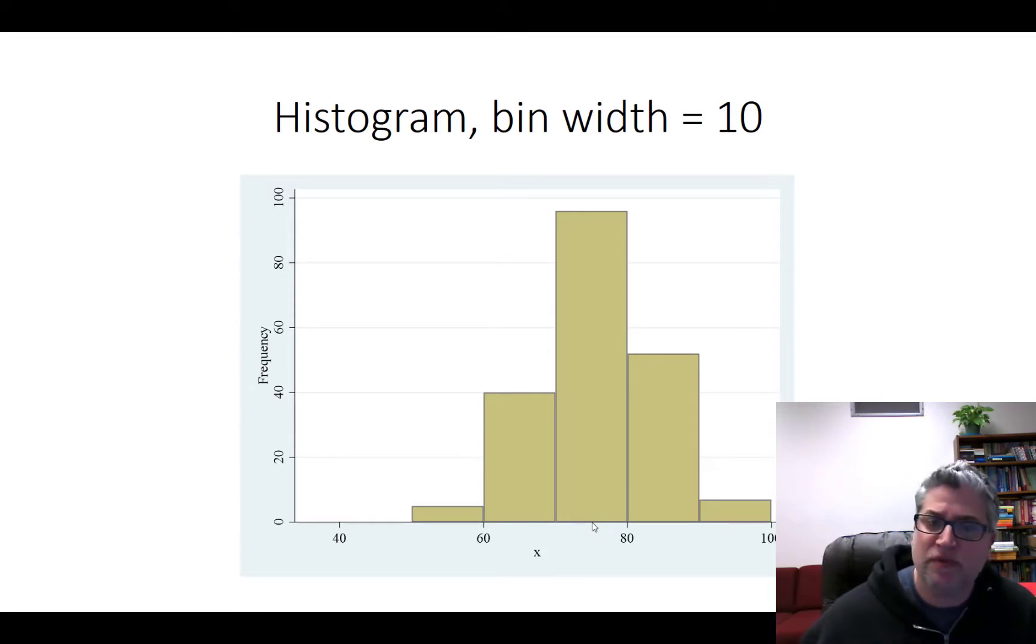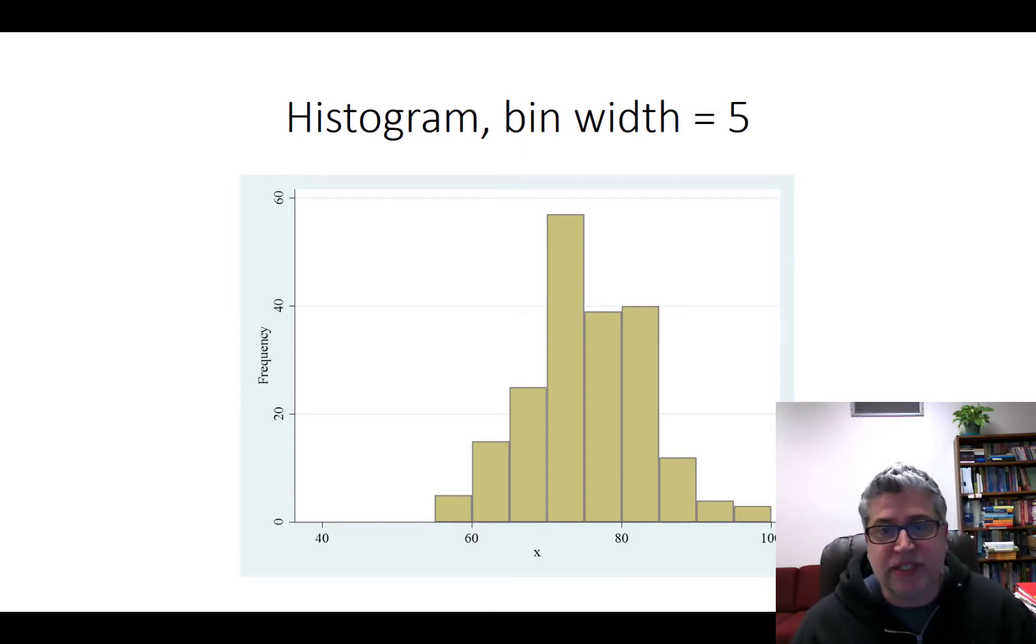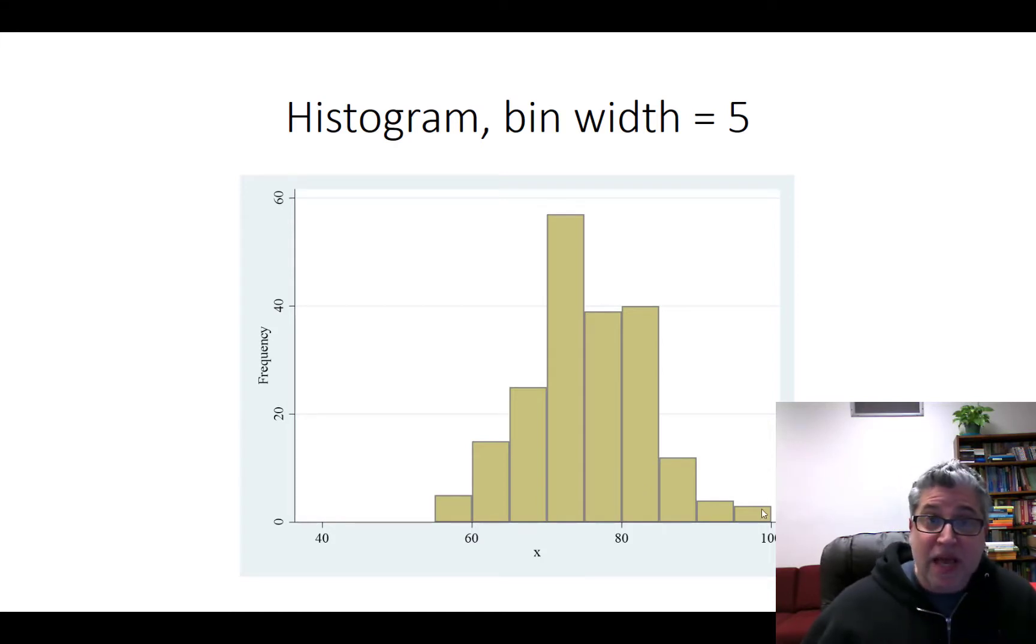We can keep doing this, and here a bin width of five looks fairly okay as well. We've got a number of bins, we've got one, two, three, four, five, six, seven, eight, nine bins. That's a fair number. But again, I can tell what my data looks like. It looks like I've got a couple of observations that are a little bit less than 60, small number that are almost or equal to 100.